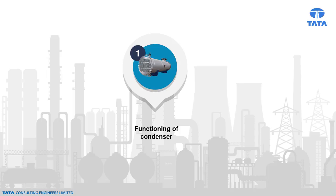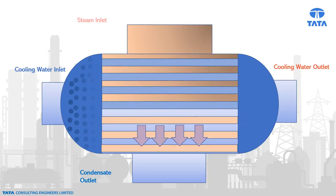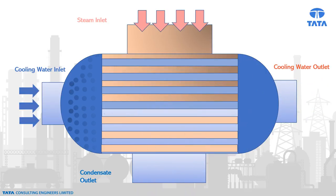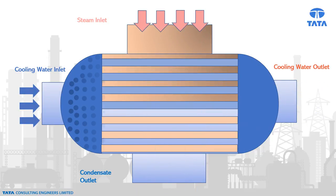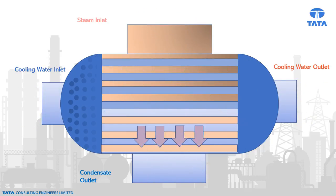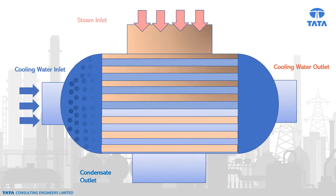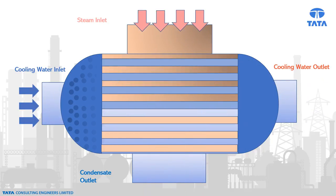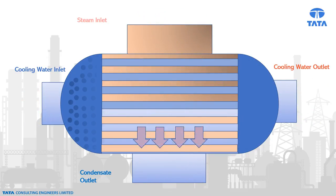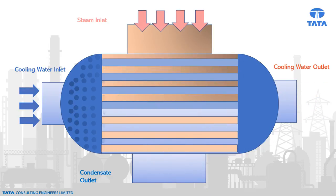Let's look at the functioning of the condenser. Steam condensers are an inevitable equipment in power plants. The purpose of a surface condenser is to condense the exhaust steam from a steam turbine to obtain maximum efficiency, and also to convert the turbine exhaust steam into condensate so that it can be recirculated through the boiler as feed water. The condenser is designed as per the Heat Exchanger Institute, or HEI, to operate at a defined vacuum level, considering various parameters such as steam flow, cooling water flow, heat transfer area, terminal temperature difference or TTD, etc.